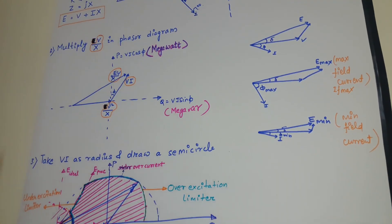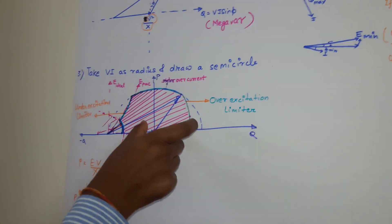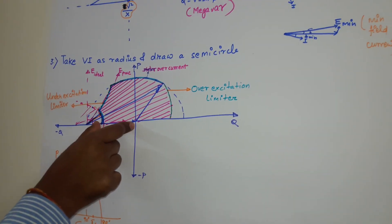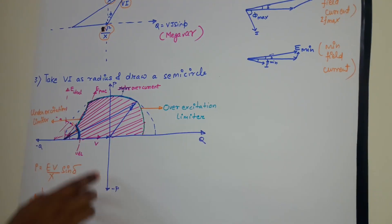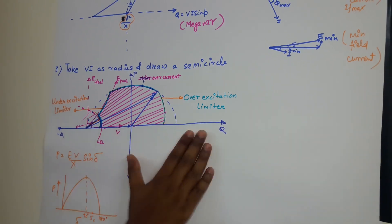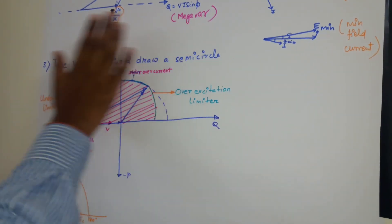Now we will derive the capability curve. This is the capability curve. You can see here the generator either it is sending reactive power or it is absorbing reactive power. But it is never receiving active power. So the generator cannot operate in this region. The generator can operate only in this quadrant and this quadrant.